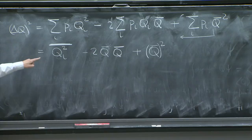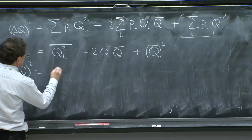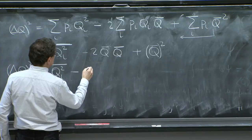And it always comes out that way. This minus 2 q bar squared plus q bar squared. So at the end, delta q, it's another famous property, is the mean of the square minus the square of the mean.